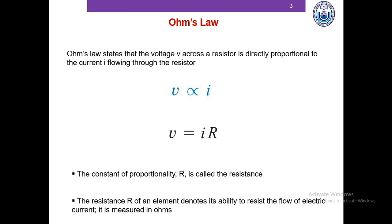Now we're going to talk about Ohm's Law, which states that the voltage across a resistor is directly proportional to the current flowing through the same resistor. Mathematically, V is proportional to I. We can write this with the proportionality constant as V equals IR, where R is the resistance. This proportionality constant, or resistance R, denotes its ability to resist the flow of electric current, and the unit of resistance is ohms. We must not confuse resistance with resistivity — these are two separate things. Resistance depends on the dimensions of the material, whereas the resistivity of a particular material is constant. If you have to change rho or resistivity, you have to change the material.